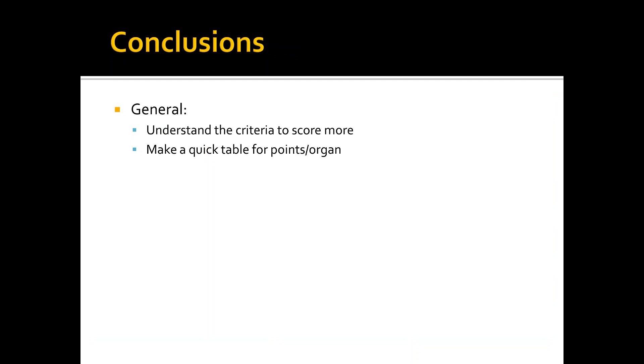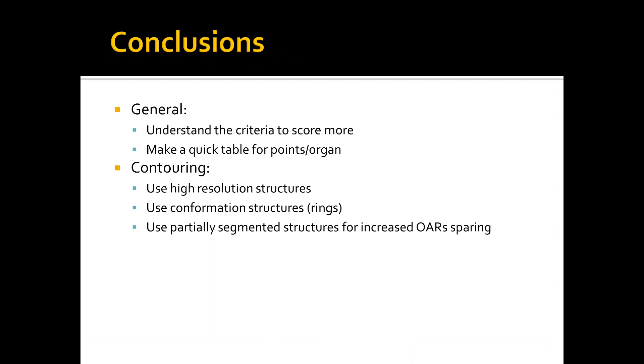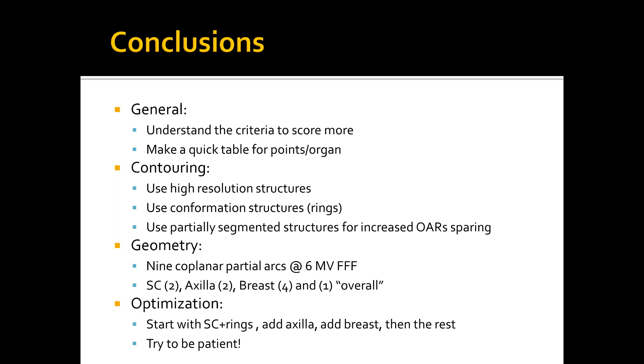So to conclude, try to understand the criteria to score more. So make a quick table for points per organ. In the contouring, try to use high-resolution structures. This helps you in more accurate calculation for your DVH. Use conformation structure rings. Use specialized rings for smaller targets. Use partially segmented structures for increased organ at-risk sparing, and I found this to be really useful in my case. In geometry, I used nine coplanar partial arcs, 6 MV FFF beam. I used two partial arcs for the supraclav, two for the axilla, and four for the breast, and one overall field just to smooth the areas at the edges of the targets. In optimization, start with the supraclav plus rings, then add the axilla, add the breast, and then the rest, and try to be patient.